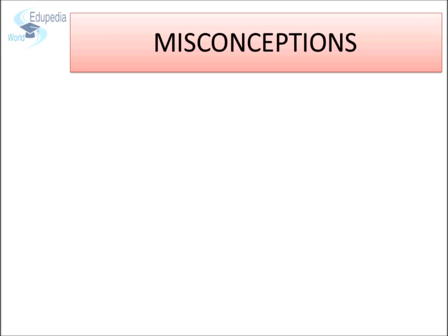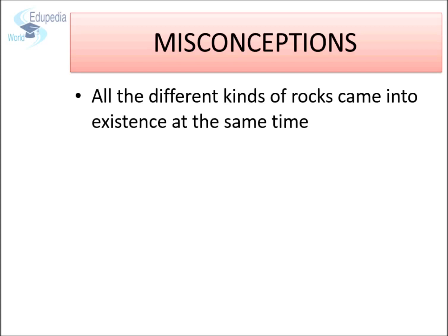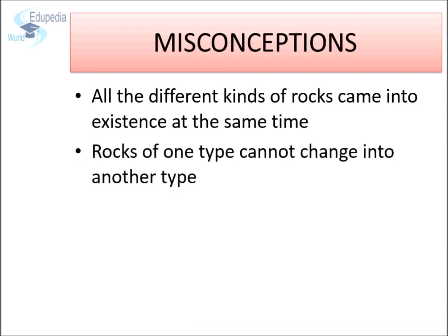Before we begin our exploration about the rock cycle, let us look at some of the common misconceptions that exist regarding the same. First, some of us believe that all the different kinds of rocks came into existence at the same time. Well, that's not true. In the previous session, we learnt that igneous rocks were the first rocks to be formed on the earth's surface. Second, some people believe that rocks of one type cannot change into another type — that rocks remain in the same form. That's not right.